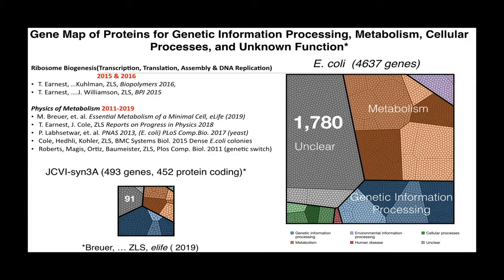If you look at the same gene map for the minimal cell, we haven't done away with the unknown, and from transposon insertion experiments we know that some of them are essential — removing them screws up the morphology of the cell. Interestingly, you've dramatically reduced the metabolism, and genetic information processing has stayed the major component. That's good because we had worked on genetic information processing on E. coli and hope to carry that over.